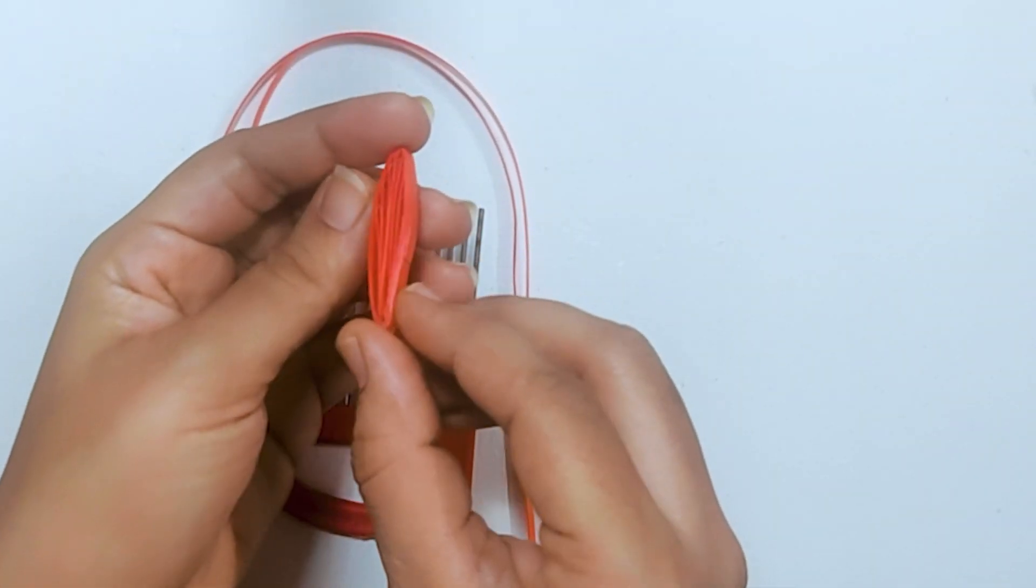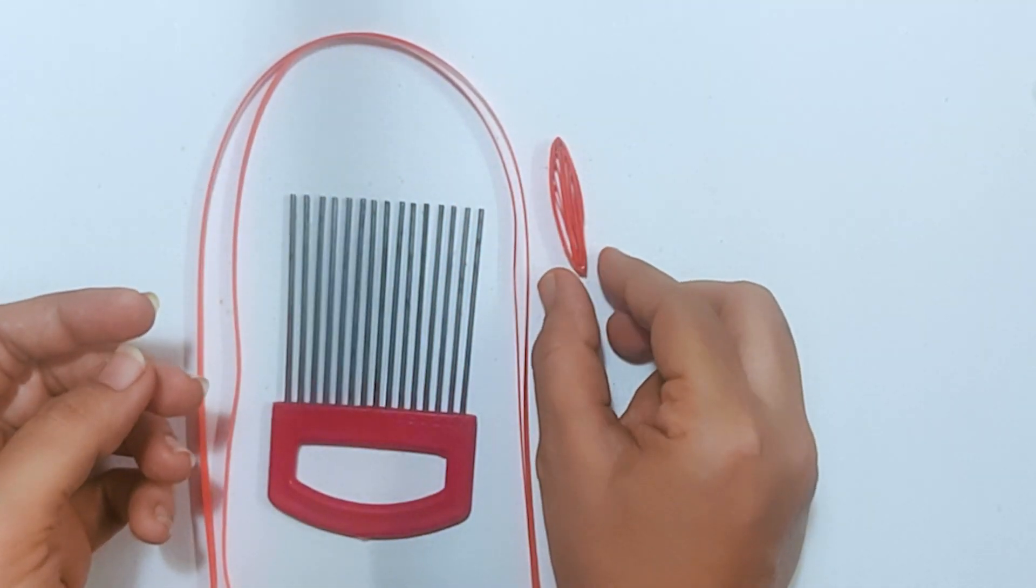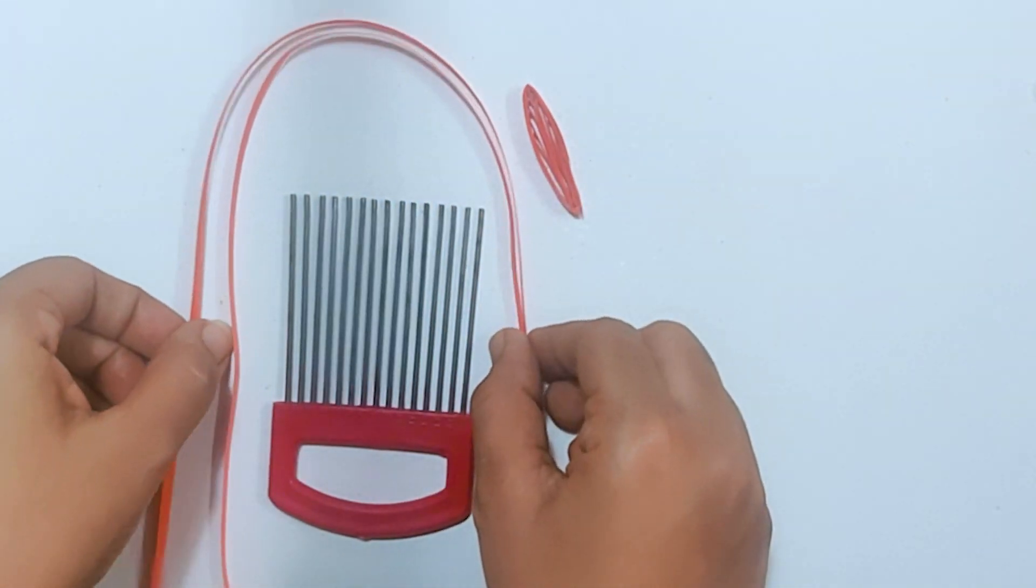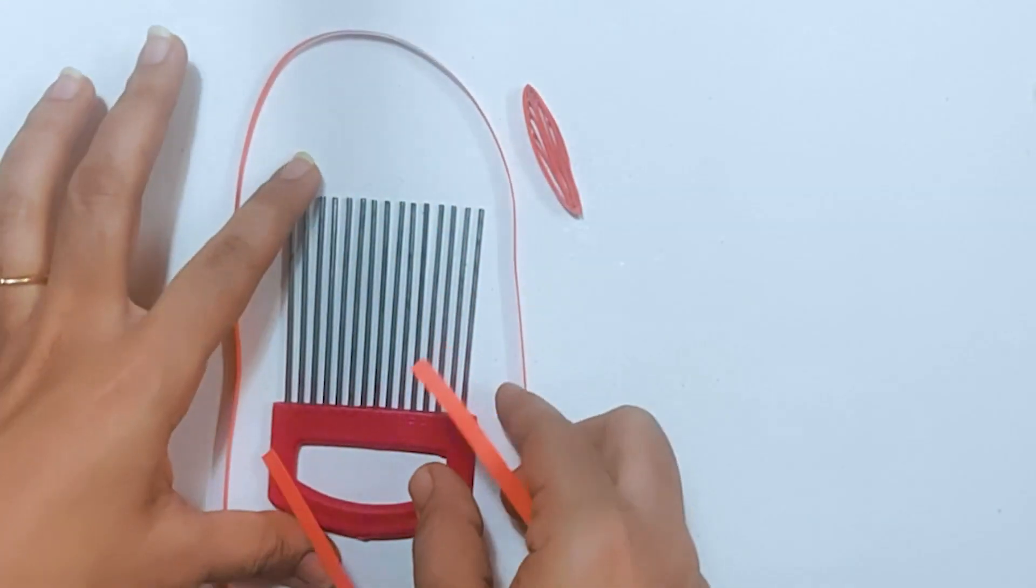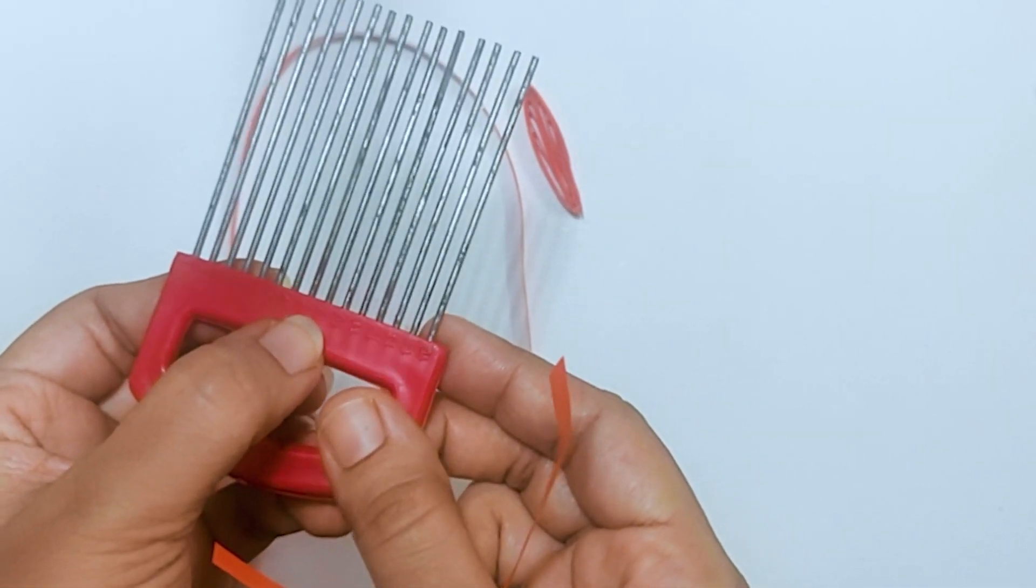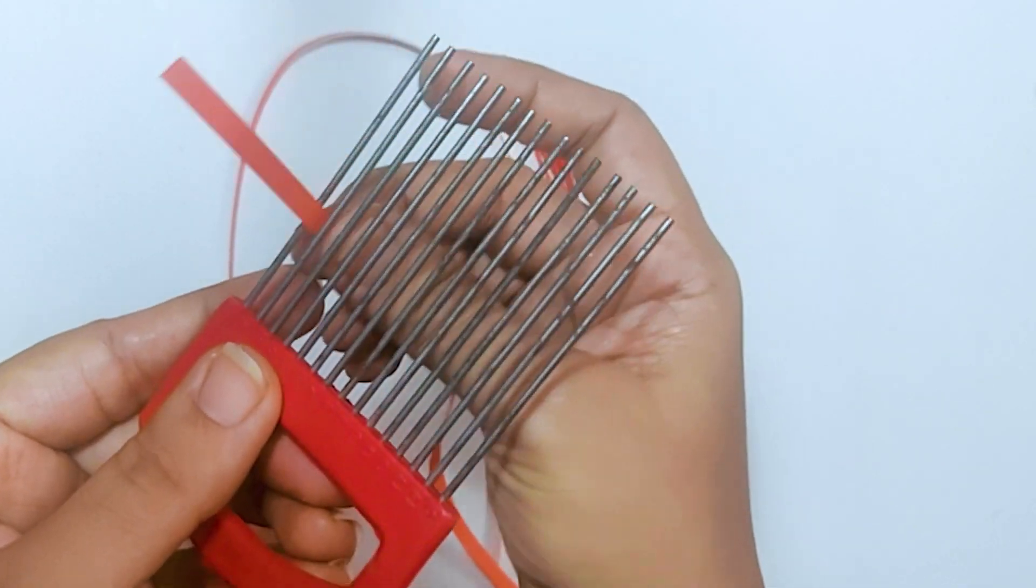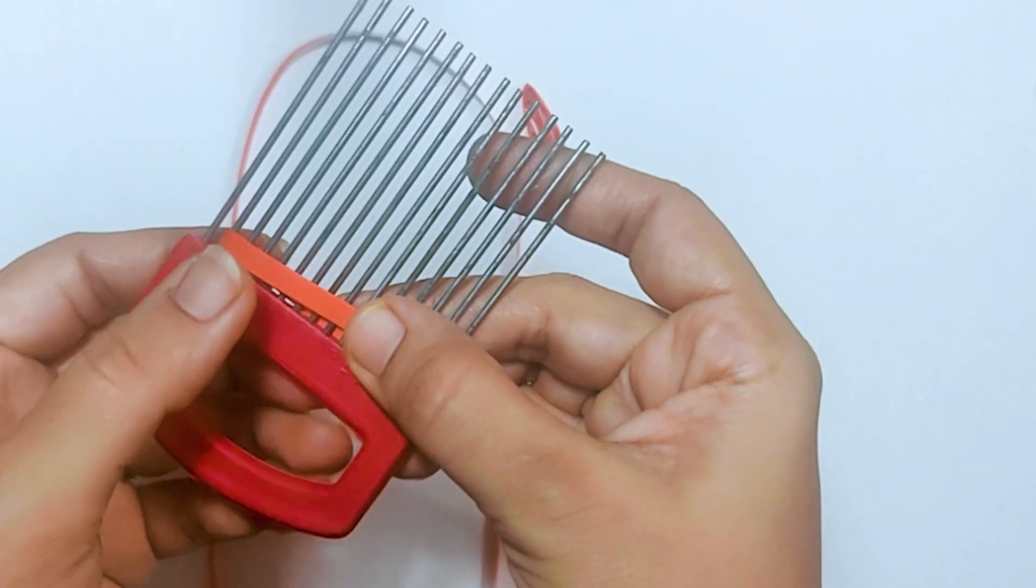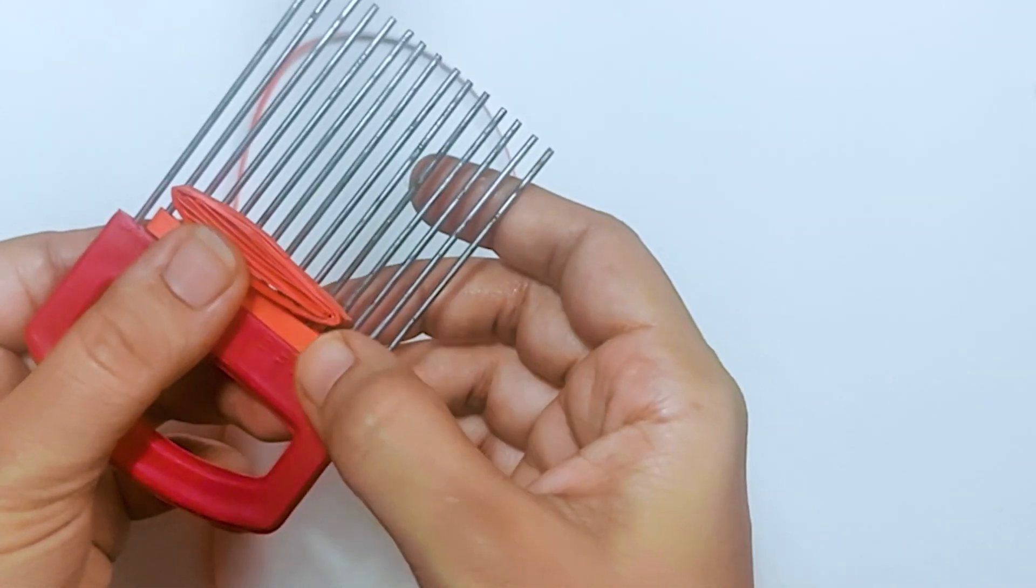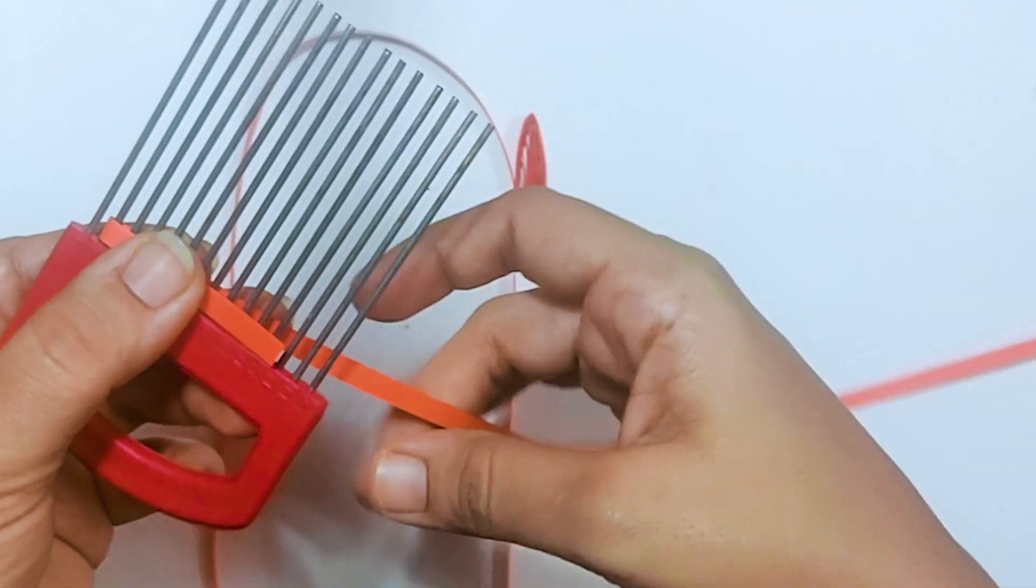Let's start making petal one. For this we have an inner and an outer petal. Take the quilling comb, decide the size that you want with the numbers on the quilling comb. Slide it in, fold it, and slowly take it out from the edge. Slide it out gently.